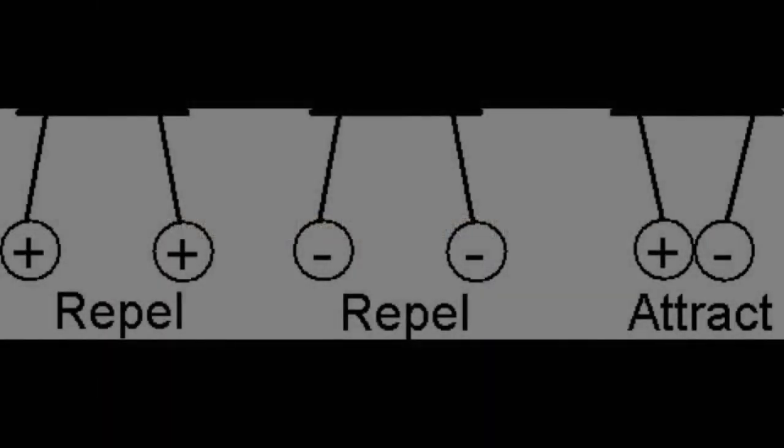This made Franklin believe that some sort of what he imagined to be a fluid was being transferred between the object being rubbed and the object doing the rubbing. Now, for reasons that no one really knows, Franklin assumed that the glass rod was somehow absorbing this electric fluid from the cloth. And so he called the charge on the glass rod positive, and he assumed that the rubber rod was losing fluid to the cloth, and so he called it negative.